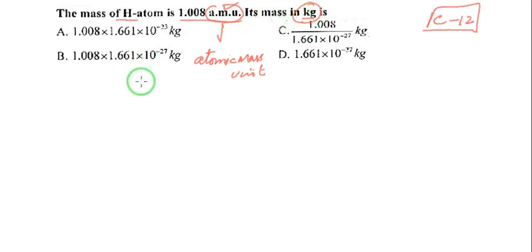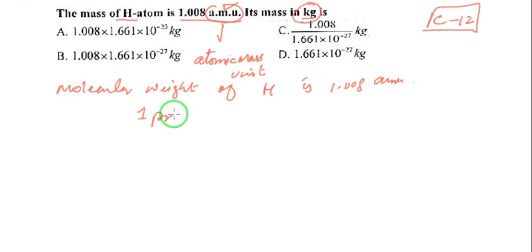In kg, we have to find the mass. The molecular weight of hydrogen is 1.008 atomic mass unit because it is having only one proton. This is the proton - one proton and no neutron. Hydrogen atom does not contain any neutron.